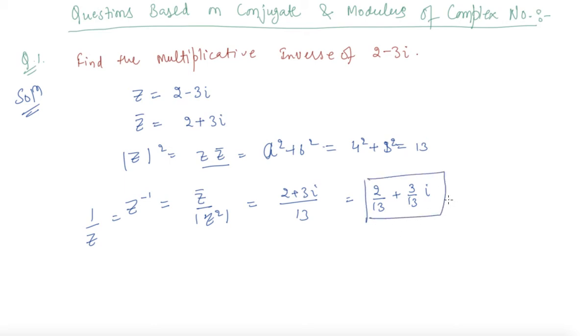I hope this question is pretty clear to you. Now question number two: express in a plus ib form. The question given to us is 5 plus root 2 i upon 1 minus root 2 i.